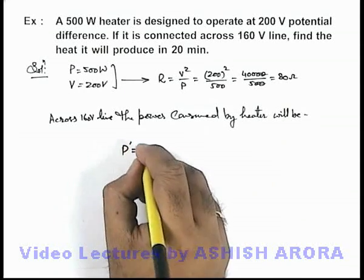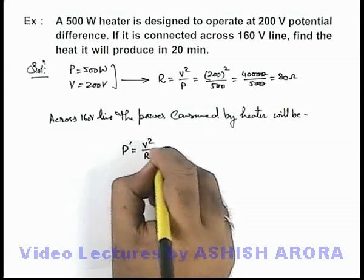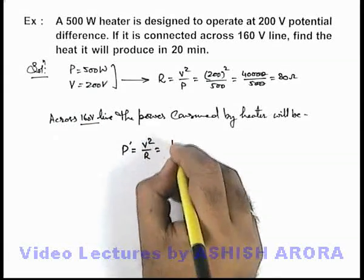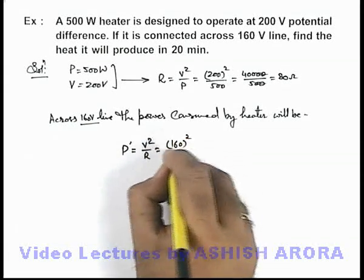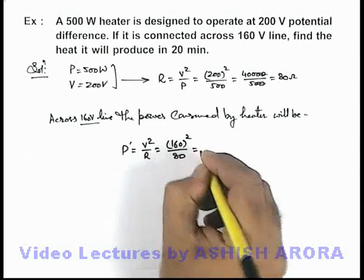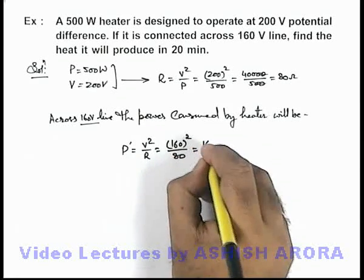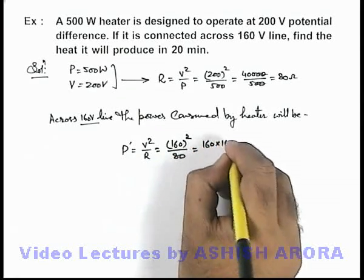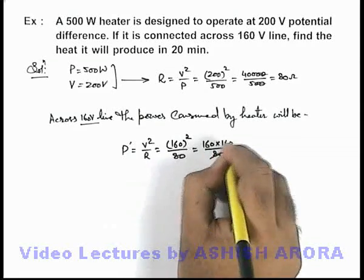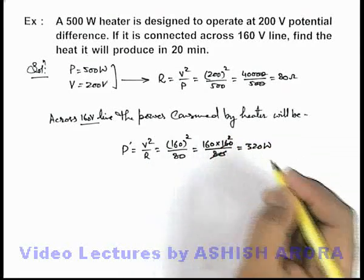We can write it V square by R. Now V can be taken as 160 volt, so this will be 160 square by 80. So if we further simplify, it is 160 multiplied by 160 by 80, this will be 320 watt.